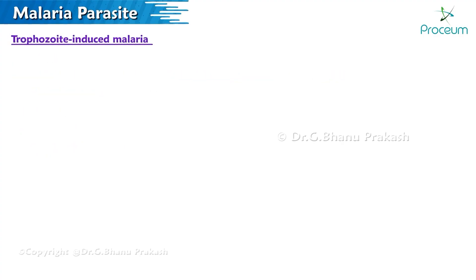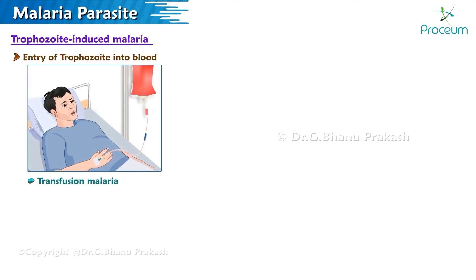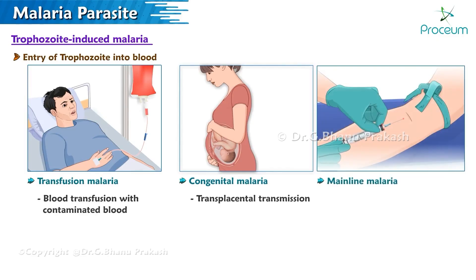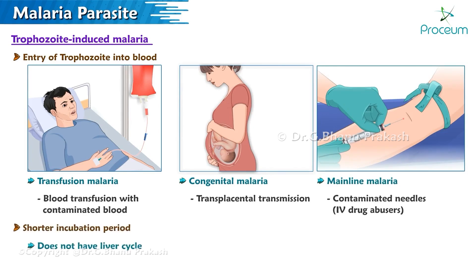Trophozoite-induced malaria occurs due to entry of trophozoites directly into the peripheral blood. It can occur via transfusion malaria by blood transfusion with contaminated blood, congenital malaria due to transplacental transmission, and mainline malaria by contaminated needles in intravenous drug abusers. It has a shorter incubation period as there is no liver cycle and no hypnozoites in Plasmodium vivax or ovale infection.